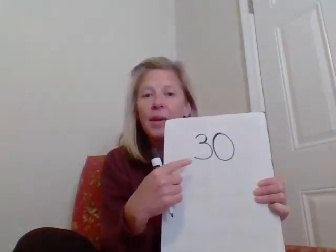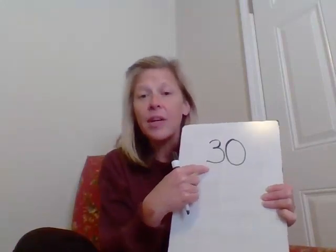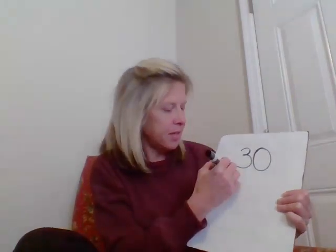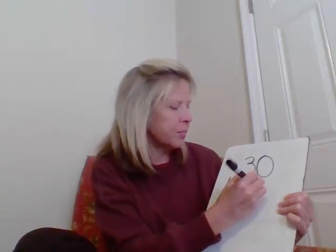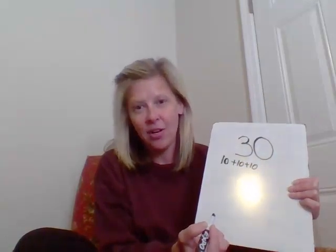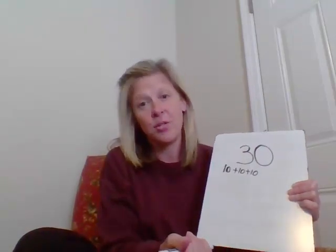The first thing we will discuss is the understanding that numbers 10, 20, 30, 40, and so on have groups of 10. So what I mean by that is if I had the number 30, knowing that the number 3 is 3 groups of 10. Another way of saying that would be 10 plus 10 plus 10 to make 30 — 3 tens and 0 extra ones.